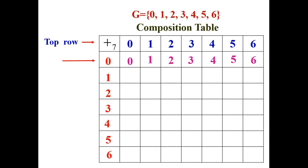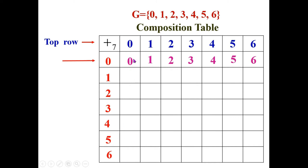Now we fill the second row headed by element 1. But once we complete the first row, we can simply fill the first column — the reason is that the question asks us to show that G with addition modulo 7 forms an abelian group, which must satisfy commutative law. The elements in a row must be the same as elements in the corresponding column, in the same order. Therefore, without any calculation, we simply fill the first column as 1 to 6.